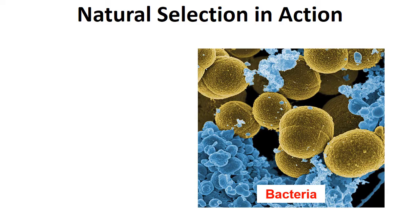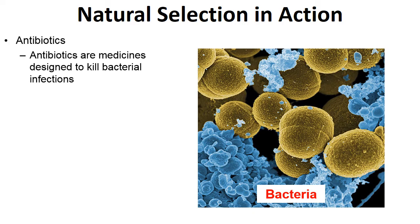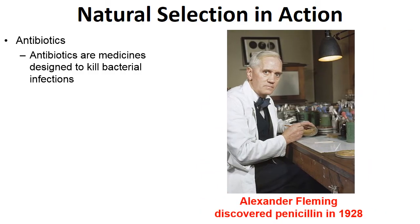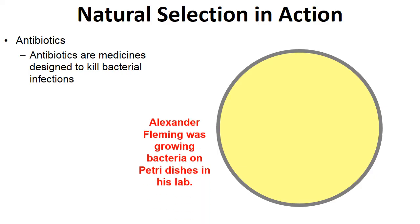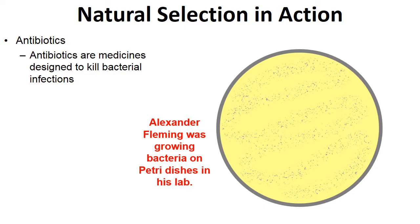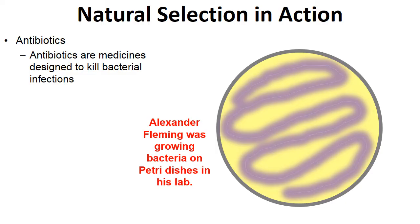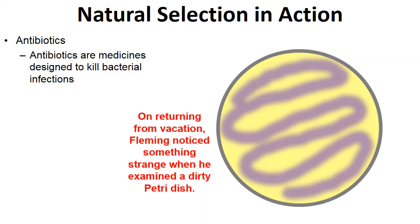A key example of natural selection in action is antibiotics — medicines designed to kill bacterial infections. Antibiotics trace their origins to Dr. Alexander Fleming, who discovered the first antibiotic, penicillin, in 1928. In his lab, Fleming was growing bacteria on petri dishes when, returning from vacation, he noticed something strange on a dirty petri dish.